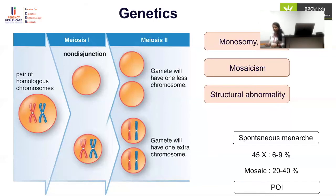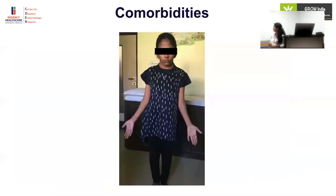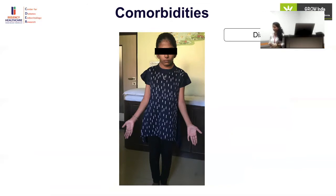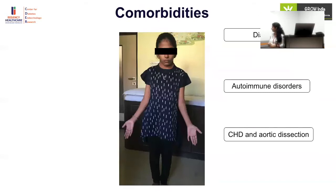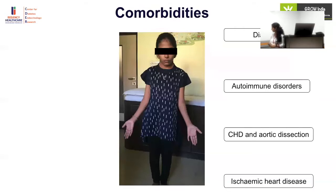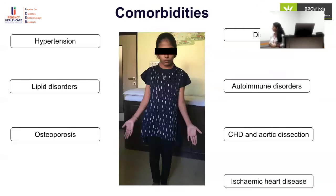Turner syndrome patients can develop comorbidities seen in menopausal women at an earlier age. These include type 1 and type 2 diabetes, autoimmune disorders like thyroid disease and celiac disease, congenital heart disease with left-sided obstruction, aortic dissection, ischemic heart disease, hypertension, lipid disorders, osteoporosis, and fractures due to low estrogen.